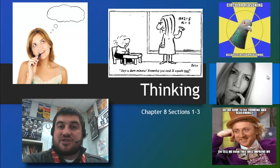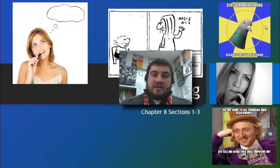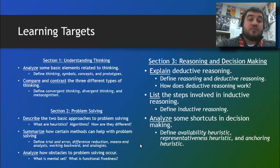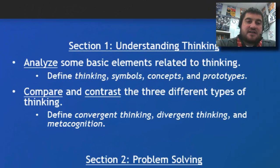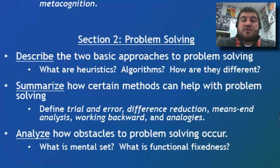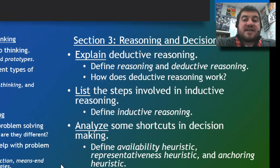Hi, and welcome back to Psychology. Here is your Chapter 8 video. We are jumping right in, and this is on thinking. Here are your learning targets for today in Section 1. It's only about the usual amount of information — maybe a little more. We'll understand what thinking is, some basic elements related to it, and then discuss three different kinds of thinking. In Section 2, Problem Solving, we'll discuss the two basic approaches and certain methods and obstacles to problem solving. And in Section 3, we're going to discuss deductive reasoning, inductive reasoning, and some heuristics we use in solving problems.